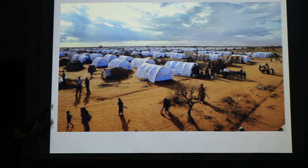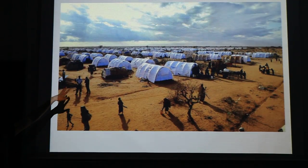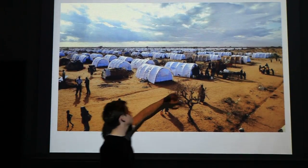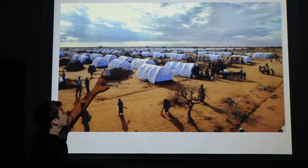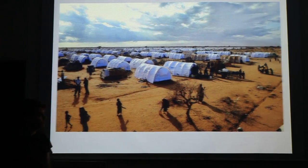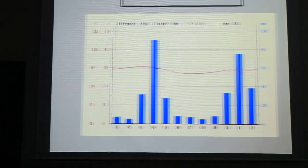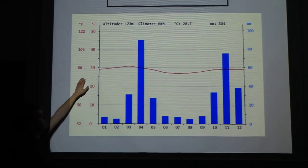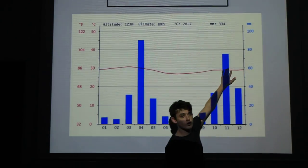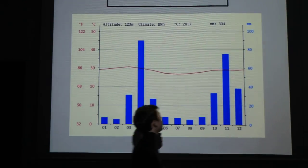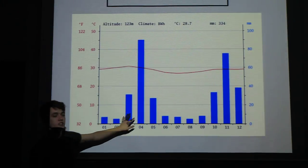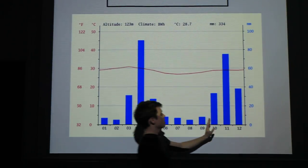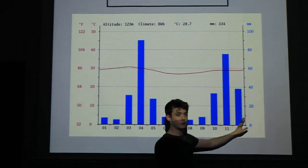Here you can see a global view of what the camp looks like. We can see UN tents and, from this angle, local tents from Somali people. In this region, the average temperature is around 30 degrees, and there are two main rain seasons: March to May, and October to December.